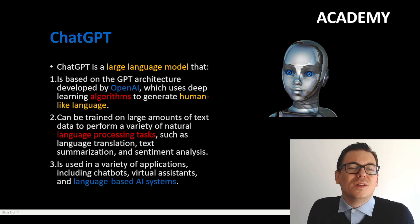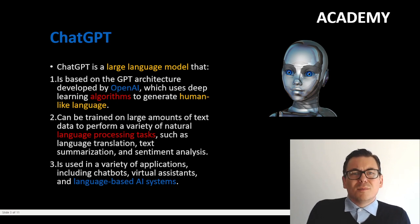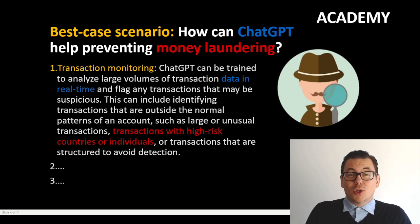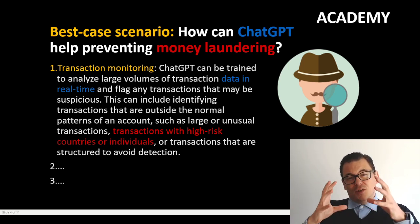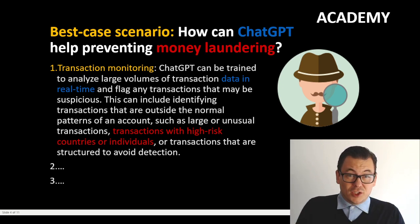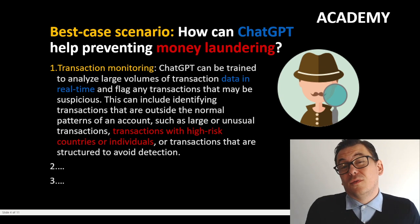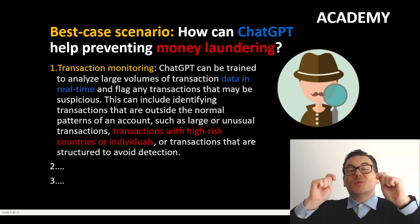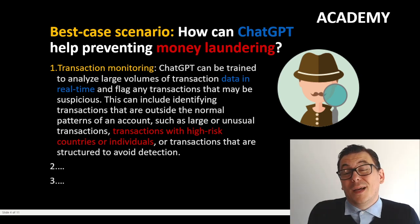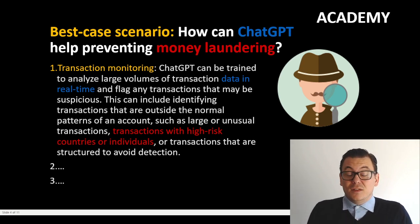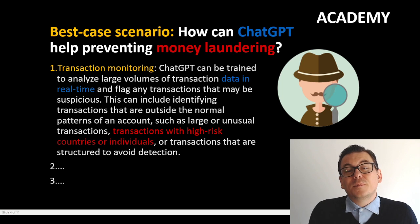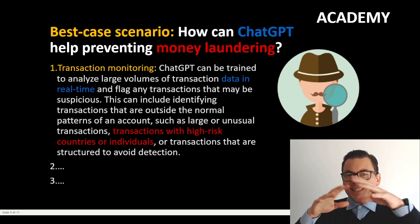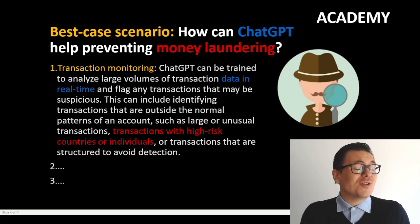But how can we use this language model to prevent money laundering? I asked ChatGPT itself to come up with three main subjects where it can help in the prevention of money laundering, and also three common restraints — boundaries on where are the limits of using ChatGPT. I'll present the answers that it came out with because they are quite interesting.